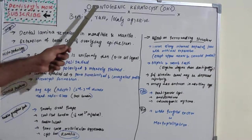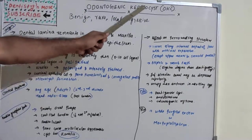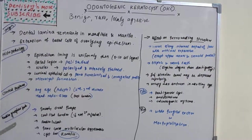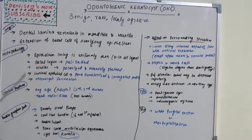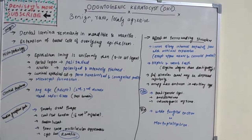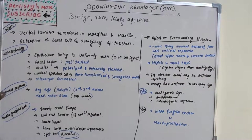As the name suggests, it is a tooth-related cyst which has a keratin deposition — that's why it's called odontogenic keratocyst. It originates from dental lamina remnants in the mandible and maxilla, or it could be an extension of basal cells of the overlying epithelium. So it forms either from dental lamina or from the basal cells of the overlying epithelium.